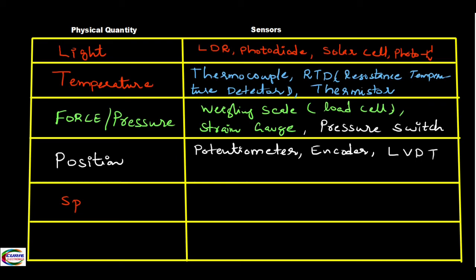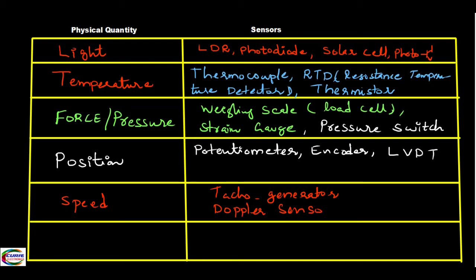Speed is another quantity we need to measure and process. One sensor for speed is the tachogenerator, which is used with motors to find what speed the motor is rotating at. Another is the Doppler-based sensor — used in traffic signals to detect if you jump a red light. This also measures speed.